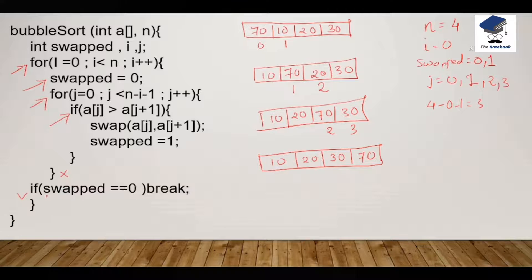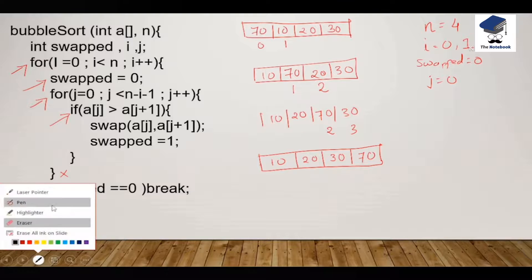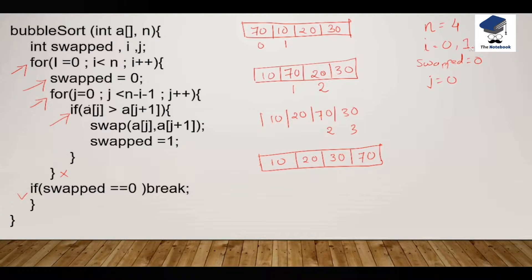We perform the conditional check: is swap equal to 0? No, the value of swap is 1, so we will not break the outer loop. We increment i by 1 and again check: 1 is less than 4 — yes. Now, one thing to note is that after each iteration, the largest element comes at the end of the array — it rises like a bubble. That's why this algorithm is called Bubble Sort: in each iteration, the largest element comes like a bubble to the end.